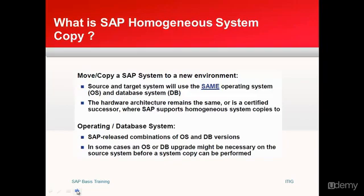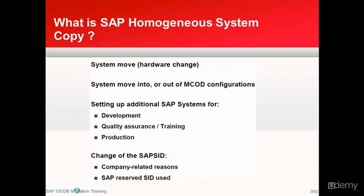Let's look at the drivers for why we perform a homogeneous system copy. First, if we are changing hardware, we need to perform this activity. For example, in an MCOS scenario, if you want to take out a particular component and put it in a new system, you may need to perform a system move. Second, if you want to create a new additional system — for example, you have just a Dev and Production system and want to add a QA system, training system, or test system — you would follow this homogeneous system copy process.